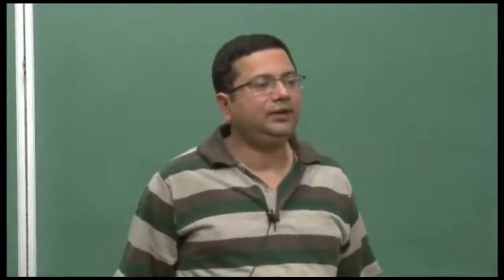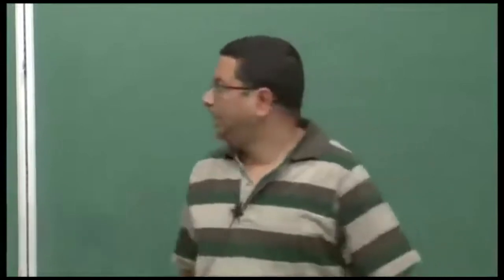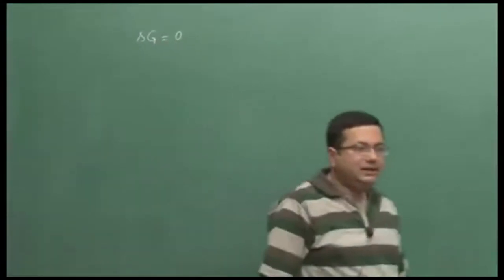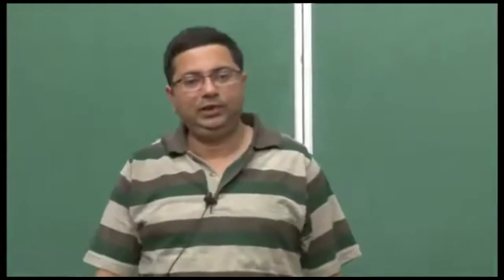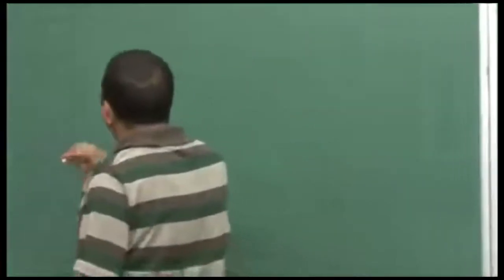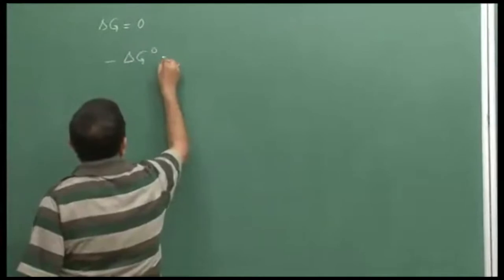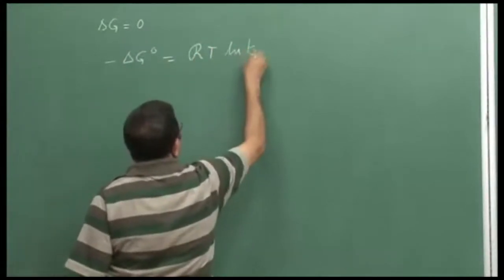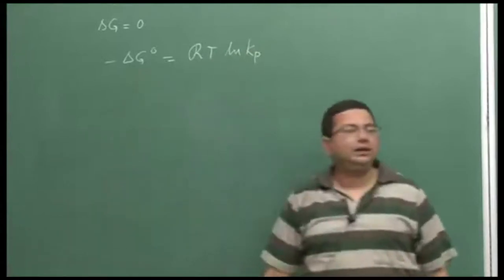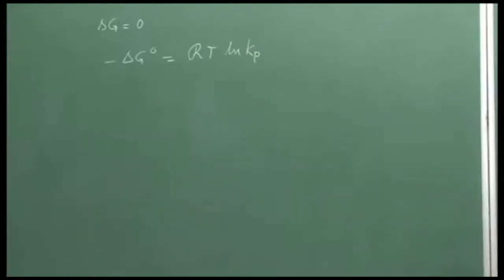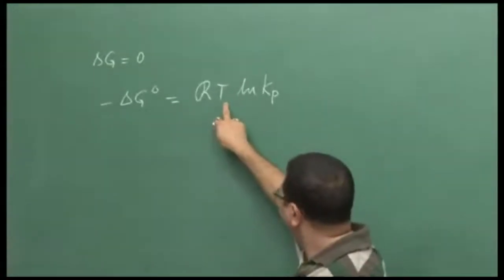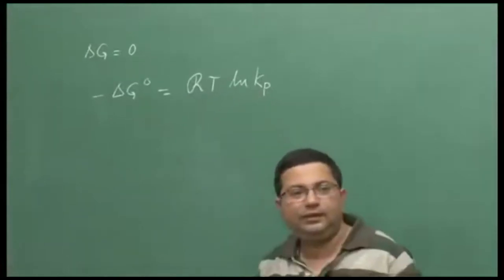In the last class we started discussing chemical equilibrium and we have shown that at equilibrium delta G is equal to 0, which is the change in Gibbs free energy is 0 for a chemical equilibrium process. And from there we have shown that delta G naught is equal to minus RT ln Kp, where delta G naught is the change in Gibbs free energy at standard state, R is the universal gas constant, T is temperature in Kelvin, and Kp is the equilibrium constant.